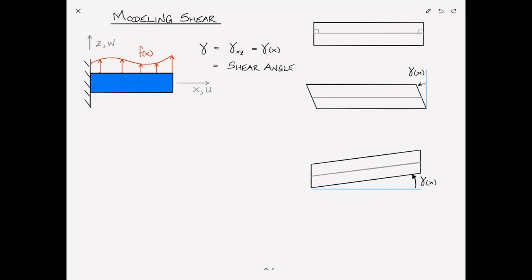So of these two models for describing shear, we're going to take the second model. In other words, we will assume that as a result of a shear strain, the center line will rotate, but the cross-sections will not rotate. Let me repeat that. As a result of the shear strain or the shear angle, the center line will rotate, but the cross-sections will not rotate.